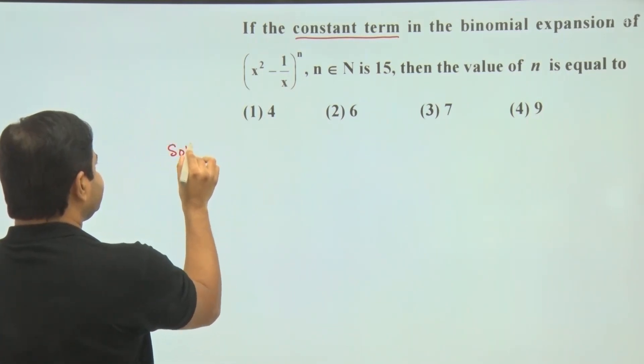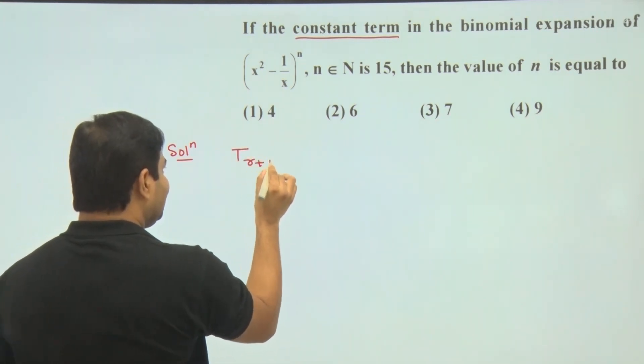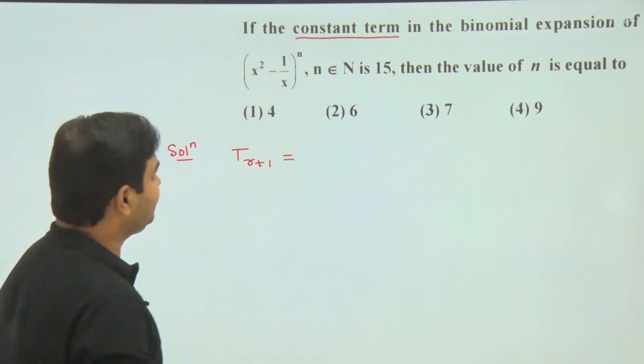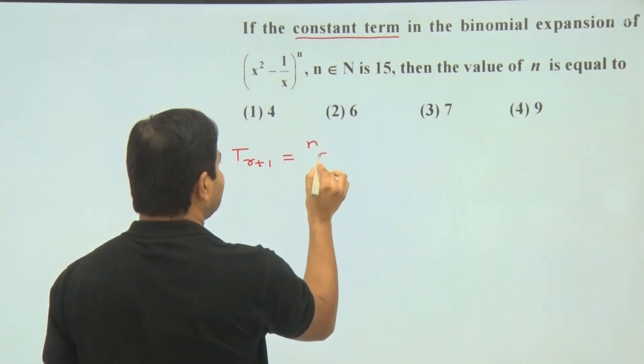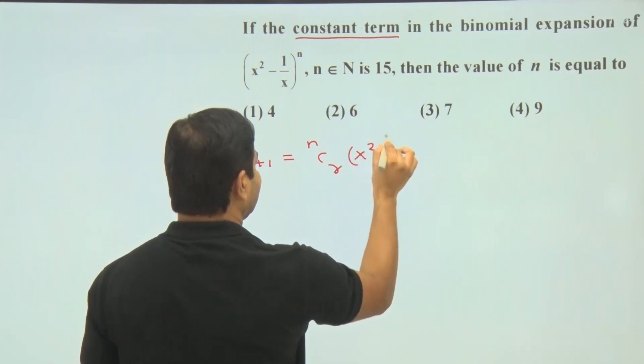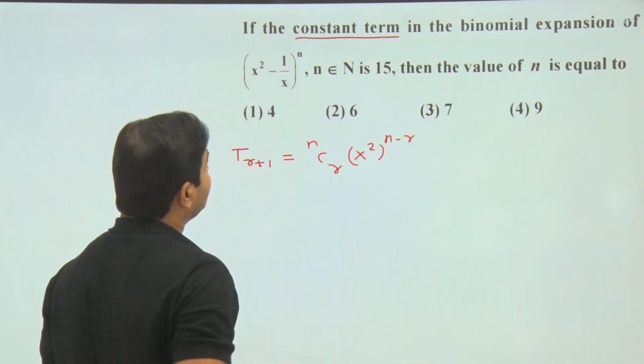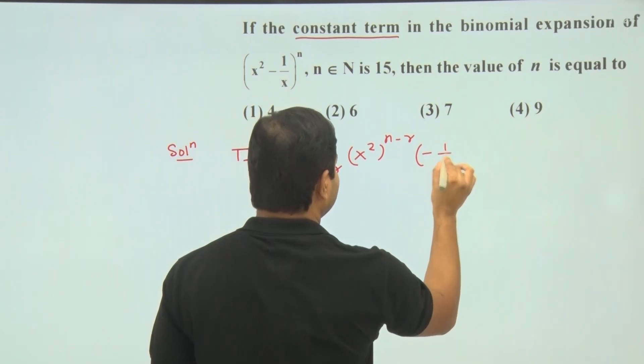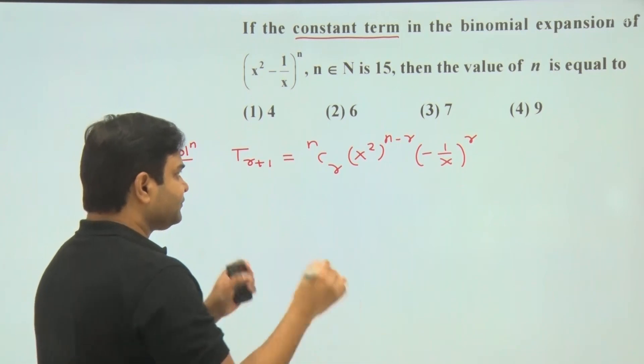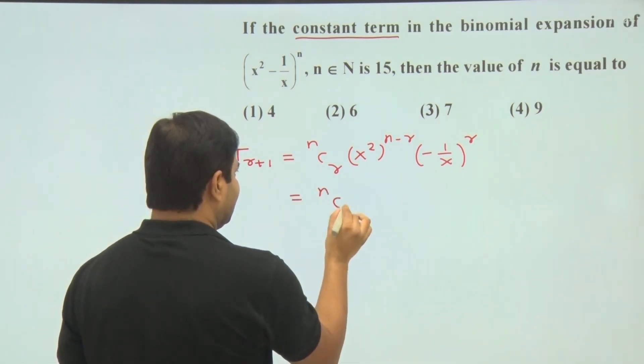Let's find out the general term of the binomial expansion. That is T_r+1, and we know that this will be nCr, first term that is x squared, power is difference of these two, into second term minus 1 upon x, whole power r. This will be the general term.